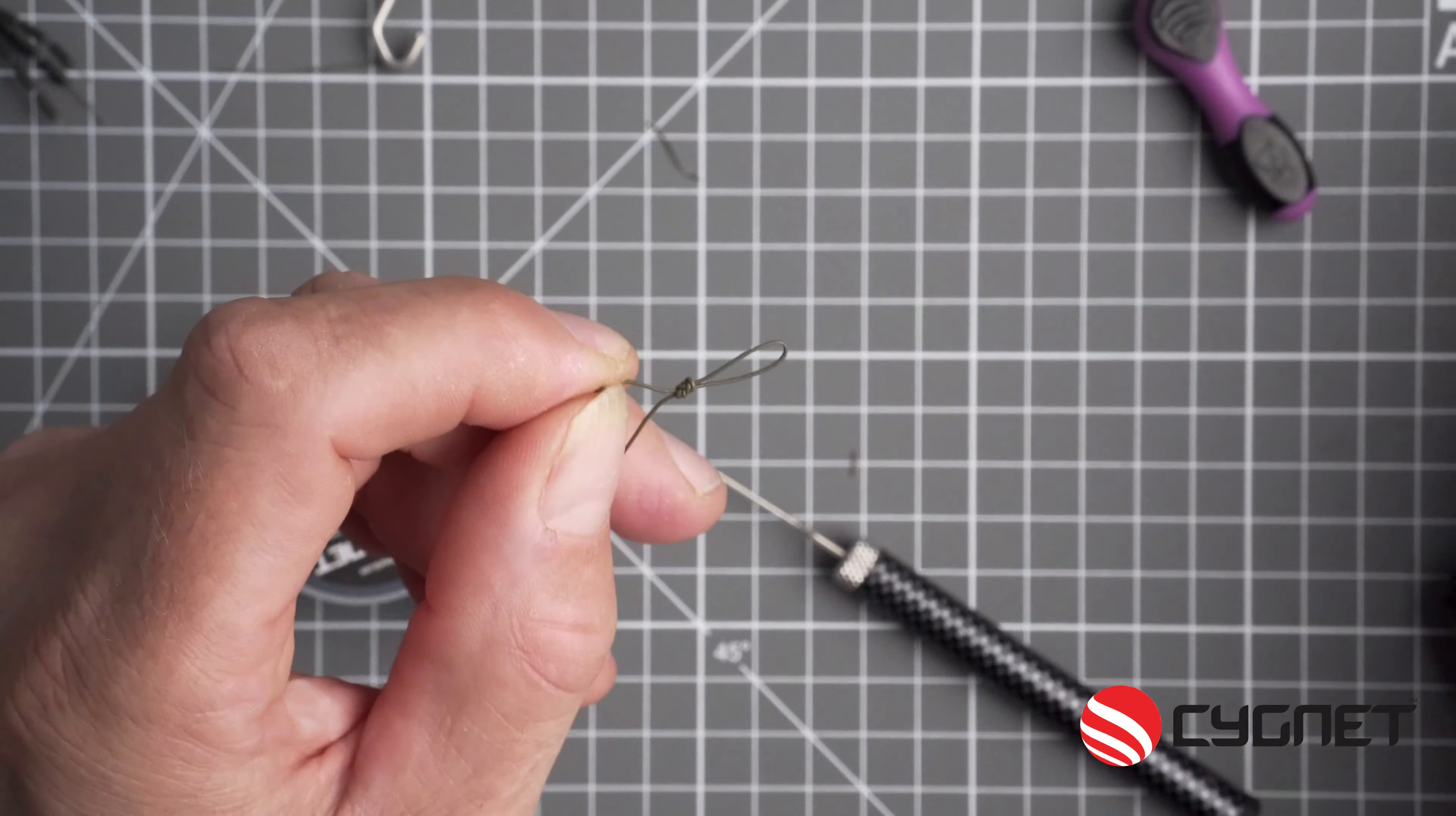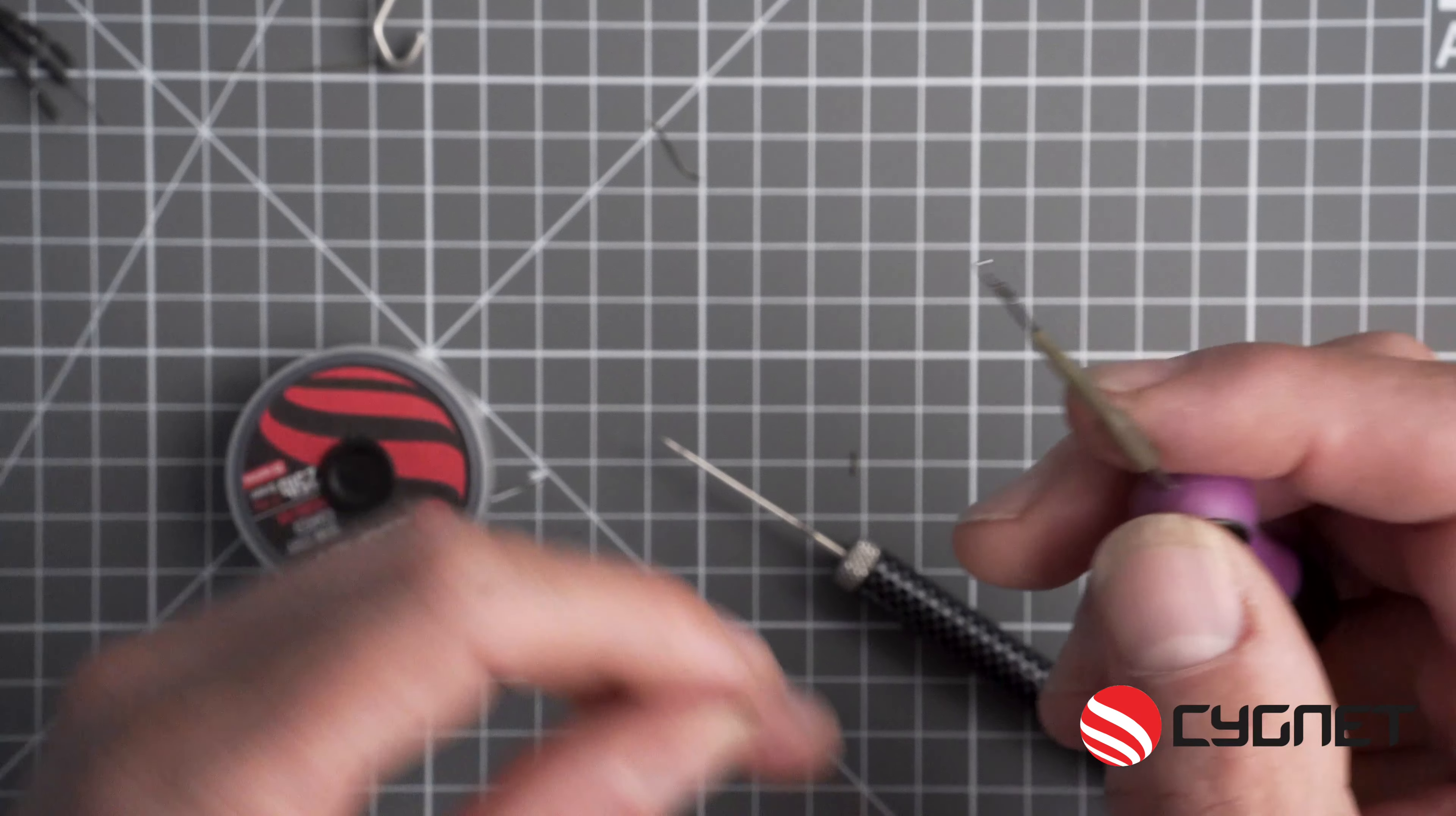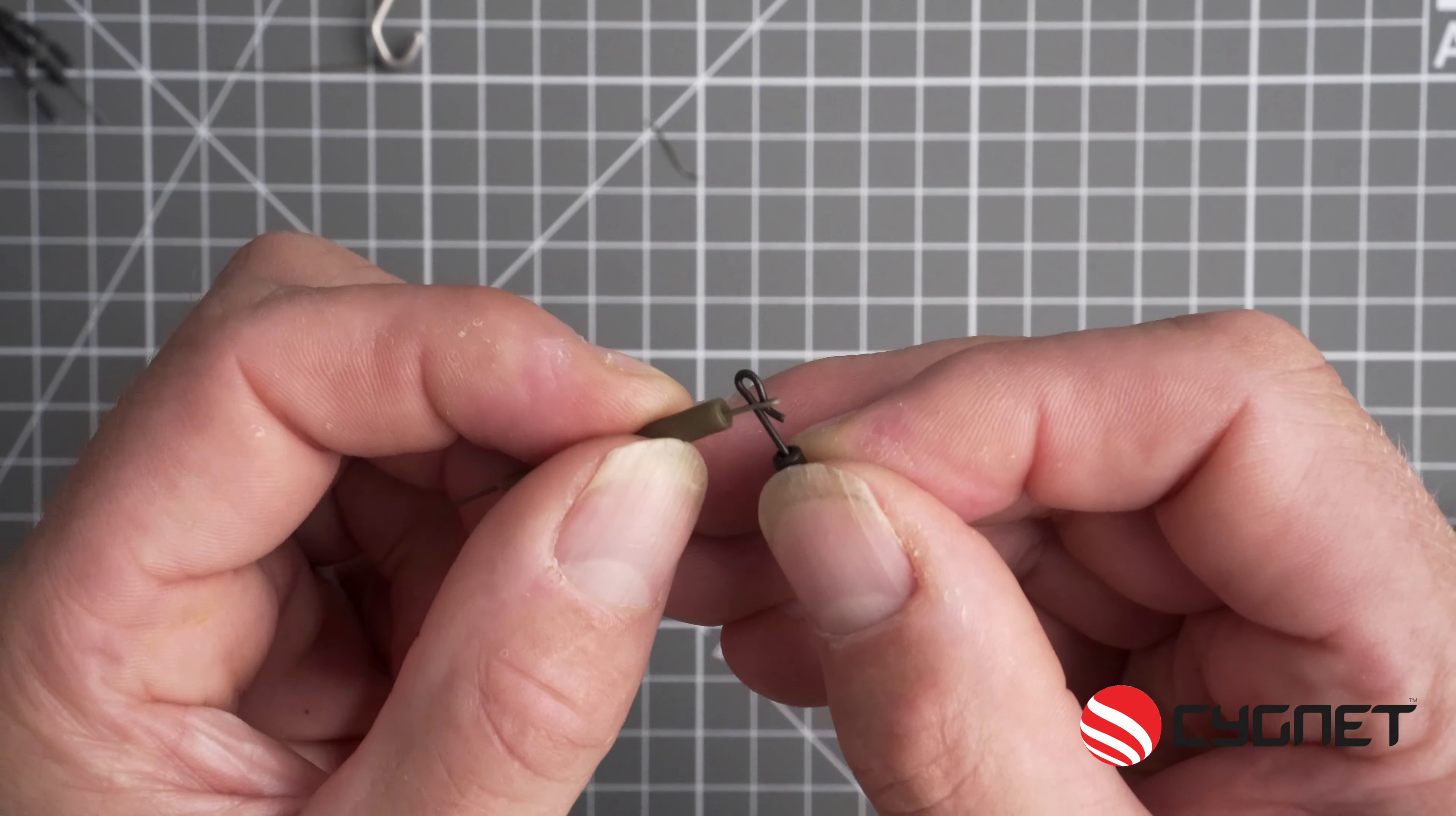So we're almost complete. Now with an anti-tangle sleeve, today I'm going to use a small one. Through the wide end, put your gated needle through and then attach your loop. Pull this all the way through until the loop is exposed out of the other end of the anti-tangle sleeve. Now I like to use a quick change swivel, a size eight, hook that up to the loop and then tease the anti-tangle sleeve over the swivel, securing the hook link in place.